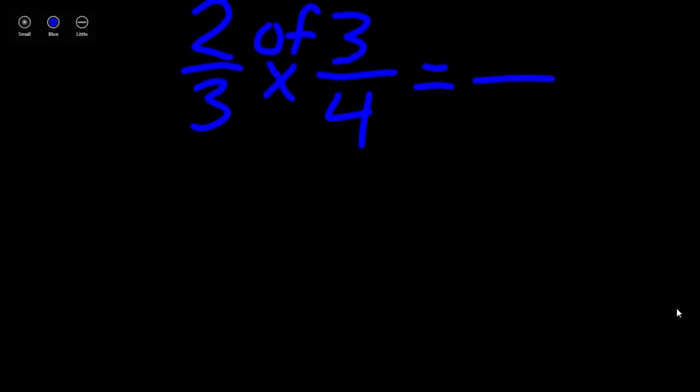To find your new numerator or your answer, you will multiply straight across your numerators. 2 times 3 and that equals 6. To find your new denominator, you'll multiply straight across your denominators. 3 times 4 and that equals 12.